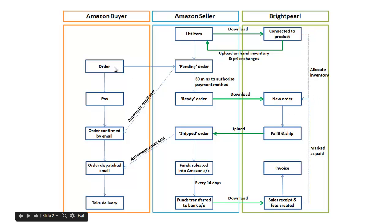The Amazon buyer places an order, they pay for the order, they get an order confirmation email, and then when you ship it they get an order dispatched email, and finally they take delivery of the goods.